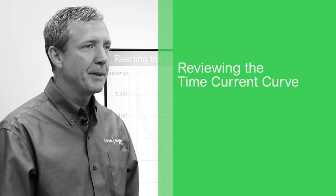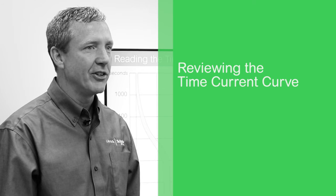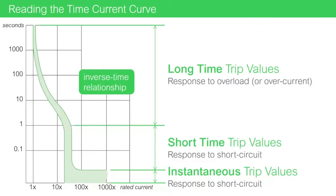In review, to be able to identify ranges and values, remember that for a time-current curve, you need to know the amperage rating of the circuit breaker to understand what the multiple rated values of the circuit breaker would be. Remember that the trip responses have a trend of an inverse time relationship. The higher the current, the faster the response.